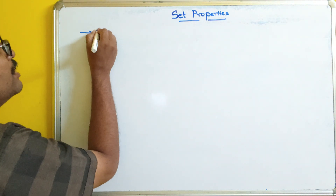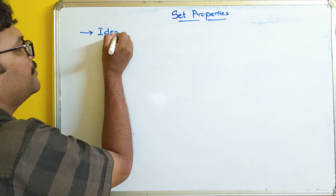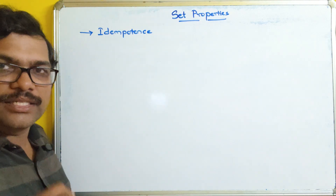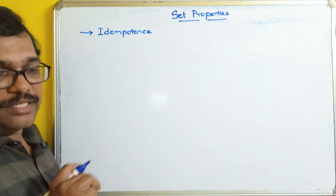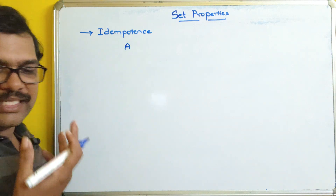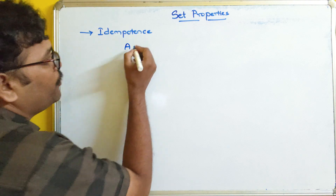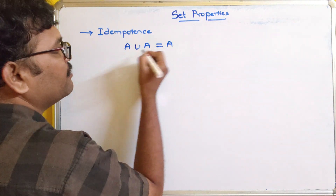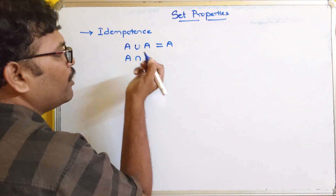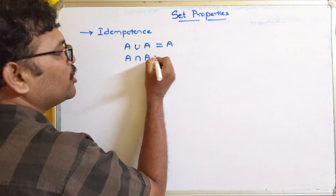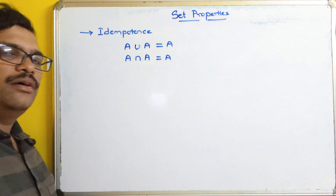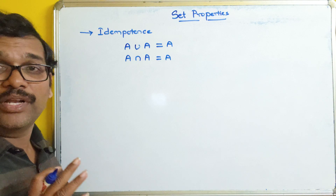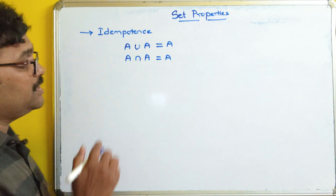The first property is idempotence. So if you take a set A and perform the union operation on A with itself, it will give A itself. Similarly, if you perform the intersection operation on A with itself, that will also give you the set A itself. This is called the idempotence property.